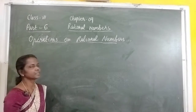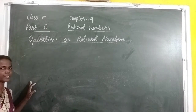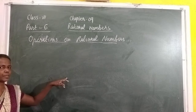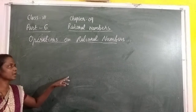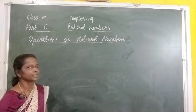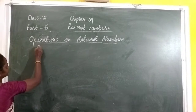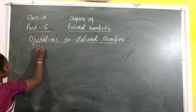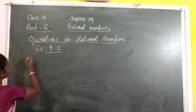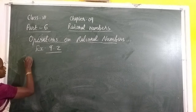If the denominators of the rational numbers are the same, we write that same denominator and add the numerators. Take your textbook, exercise 9.2, and find the sum — means addition.